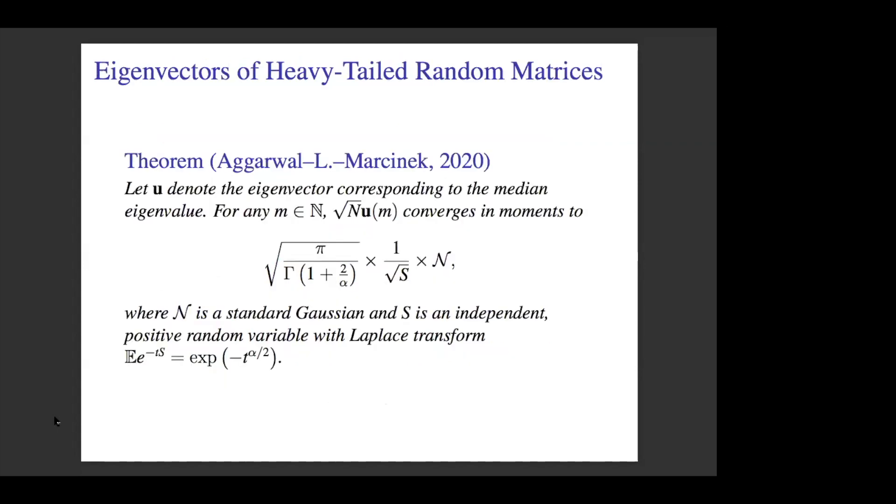For these Levy matrices, we see the asymptotic behavior of both eigenvalues and eigenvectors is different than the Gaussian ensemble. Here's a theorem - an exact result for the median eigenvector corresponding to the median eigenvalue. I take my Levy matrix, take all the eigenvectors, and take the one corresponding to the median eigenvalue, which would be very close to zero by symmetry. The interesting point is we don't get a normal distribution. We get this very interesting distribution which is a normal times an independent random variable.